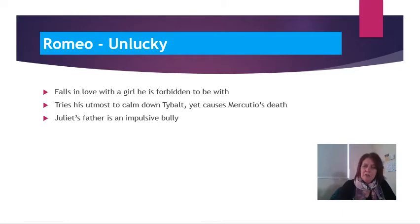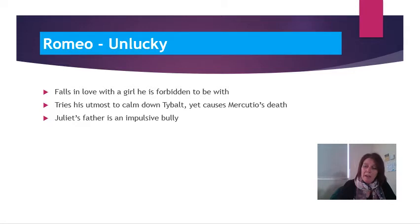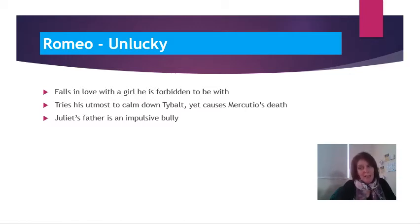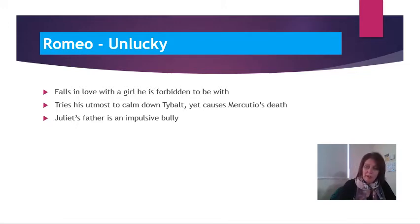Unlucky because Juliet's father is an impulsive bully. If we remember back to the scene where Tybalt has died and Juliet is in her chamber weeping, very pale, her father enters and his solution to the grief his daughter is experiencing is to arrange a hasty marriage to the Count Paris, which eventually he insists she go through with despite her protestations.